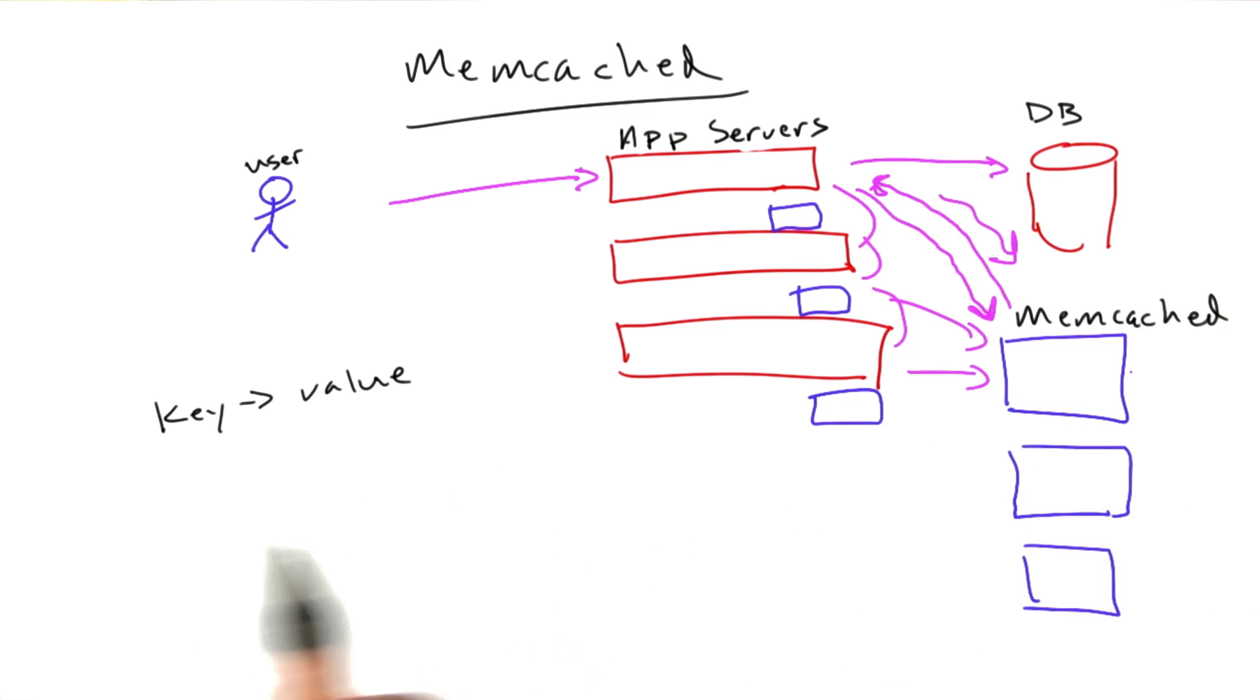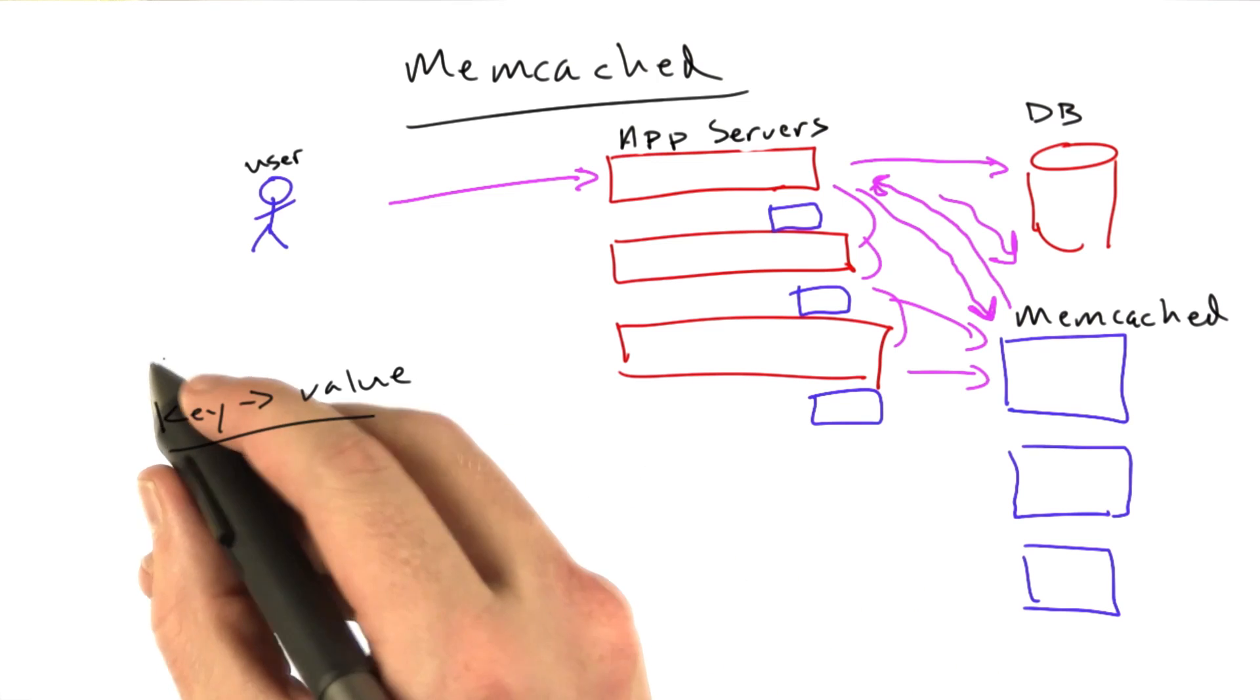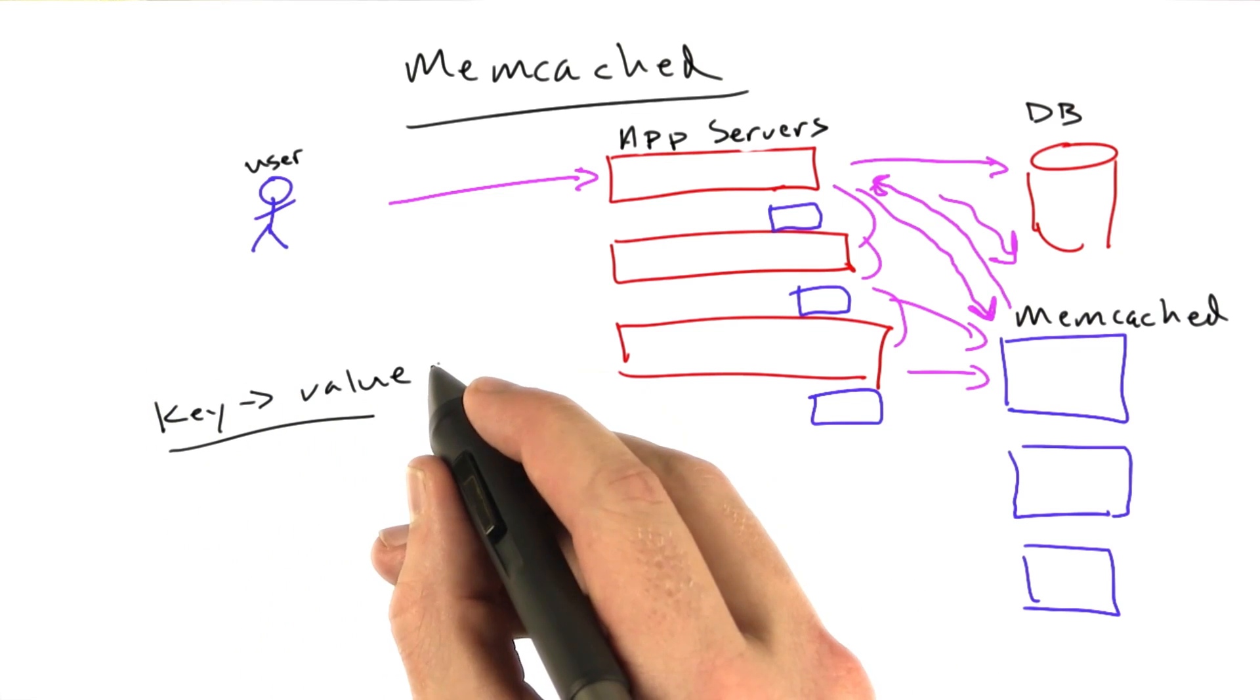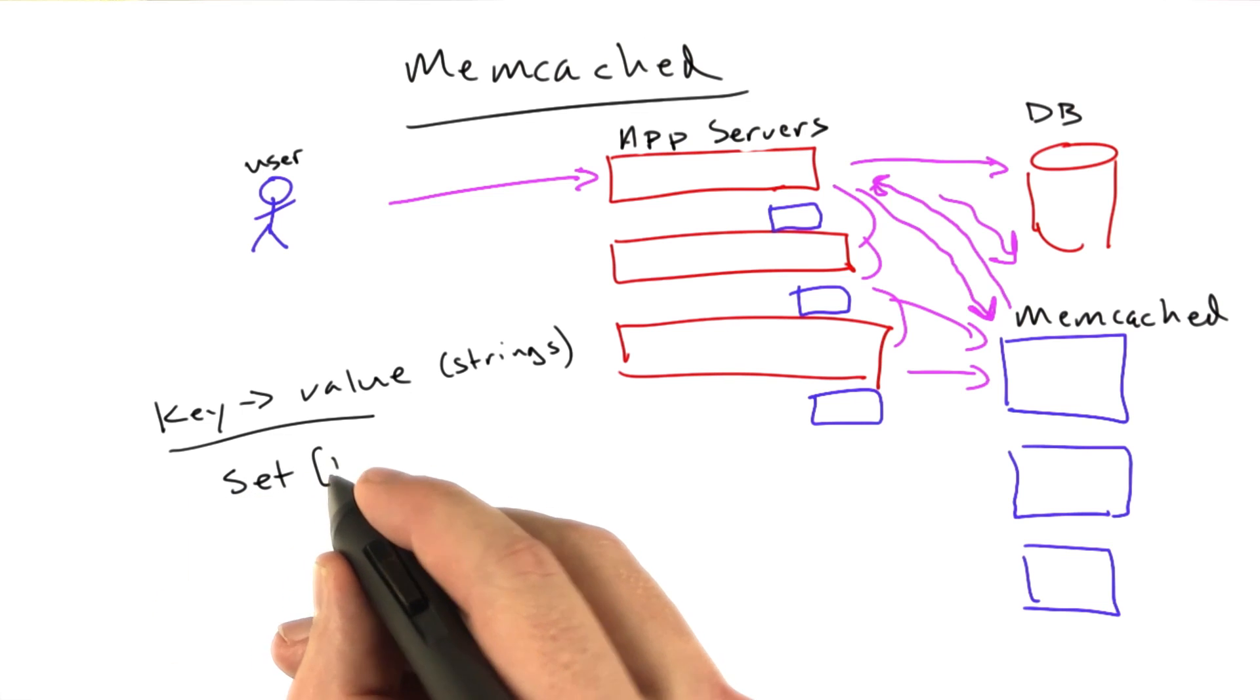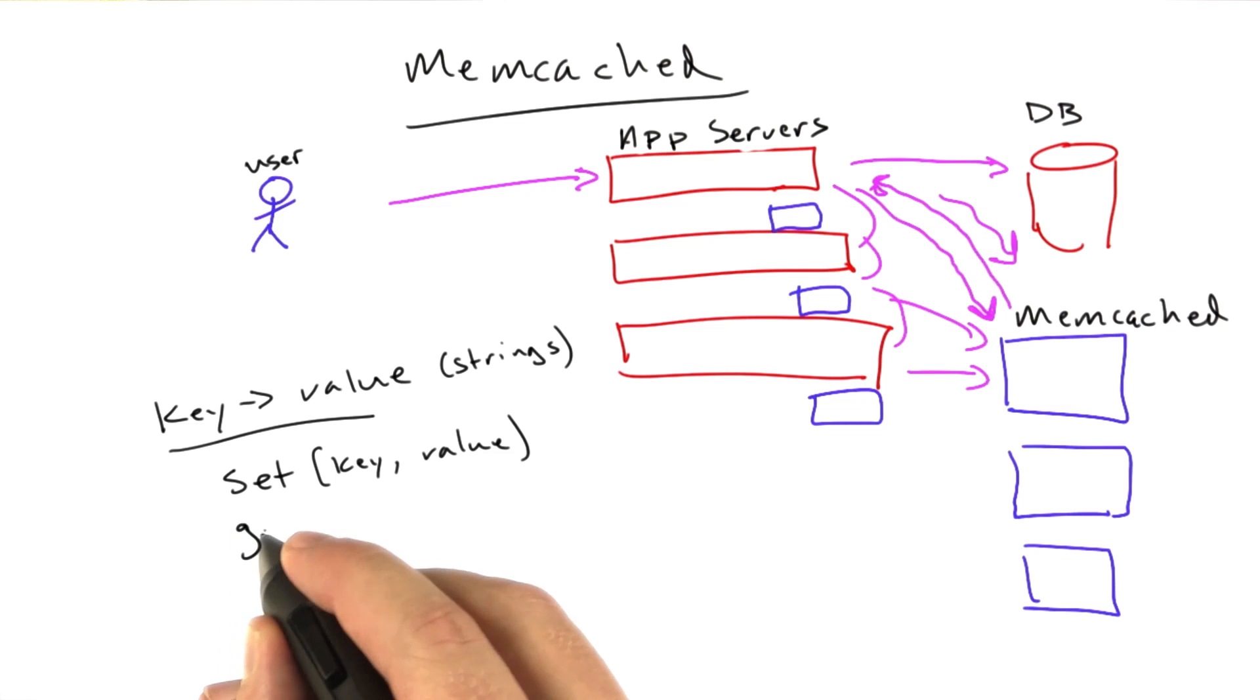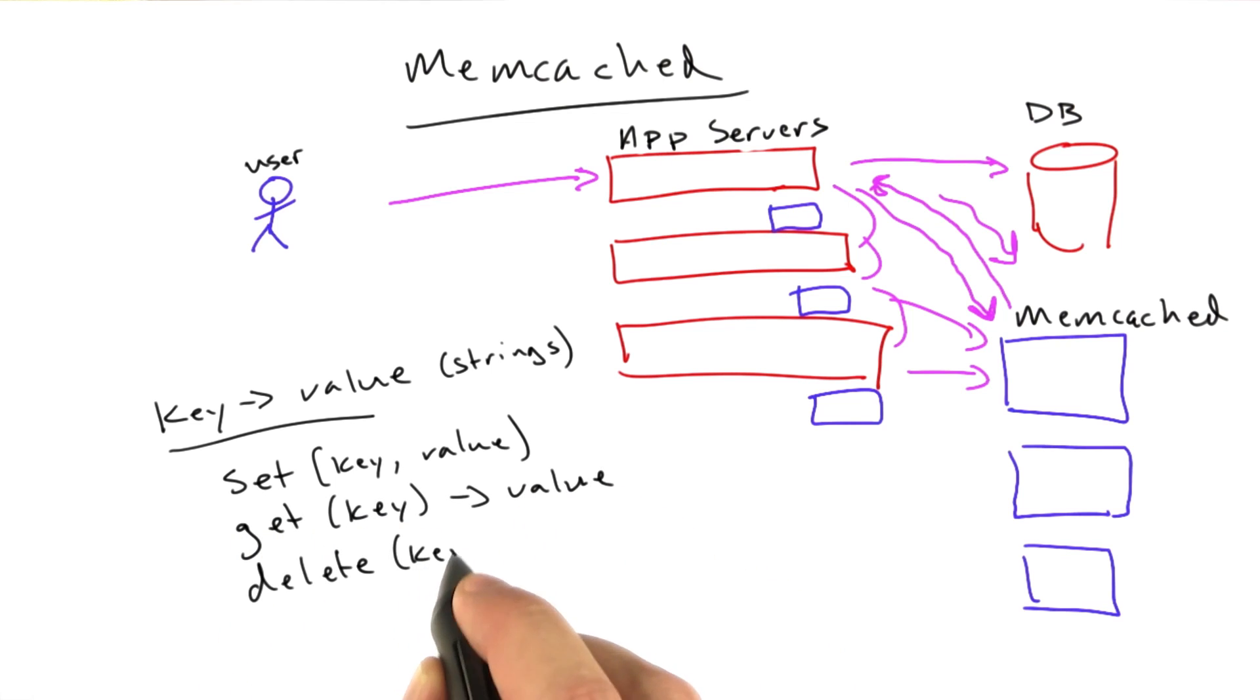So Memcached is a very simple protocol and the operations it does are very simple. Ultimately we're going to be storing keys to values, where the keys and values are both strings. And the operations look something like this. We've got set, and this takes a key and a value. We've got get, this takes a key and returns a value. And we've got delete, which takes a key and deletes the key.